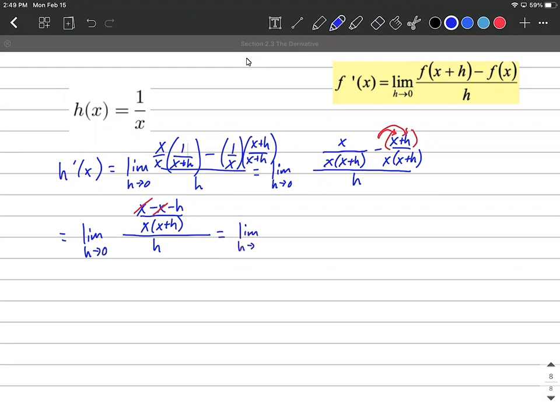Next, we still have the limit as h approaches zero. H in the denominator. But now a little fraction up in the numerator, we have negative h over x times x plus h.